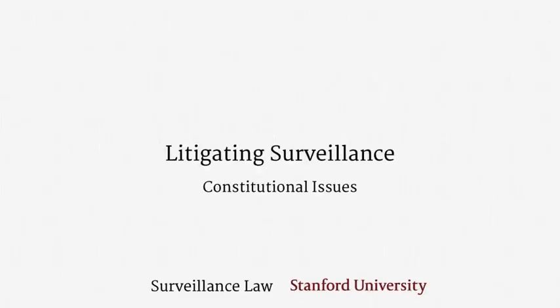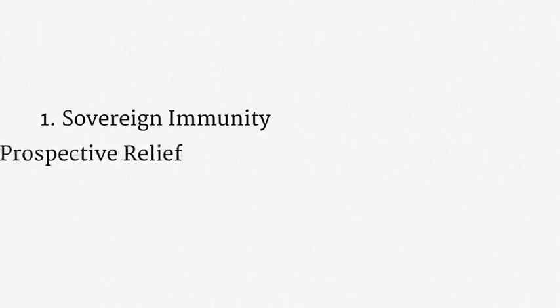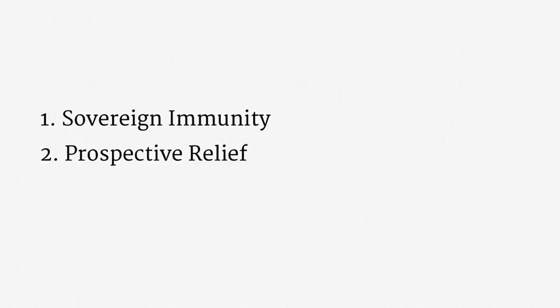Welcome back. This is the latter half of the material on litigating surveillance, and it deals with constitutional issues. There are three topics I'd like to address. First, sovereign immunity — it's a constitutional doctrine lurking in the background of all surveillance challenges, so we'll take it head on. Second, claims for constitutional prospective relief. The rules there are pretty straightforward. Last, we'll work through constitutional damages claims. The rules there are not straightforward at all.